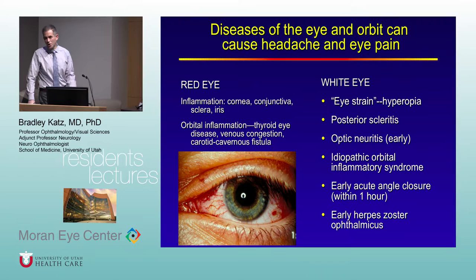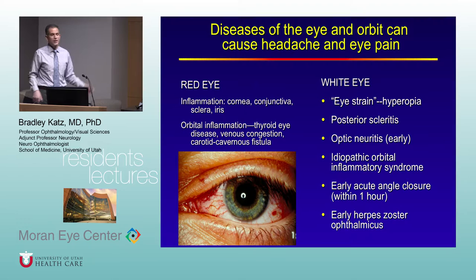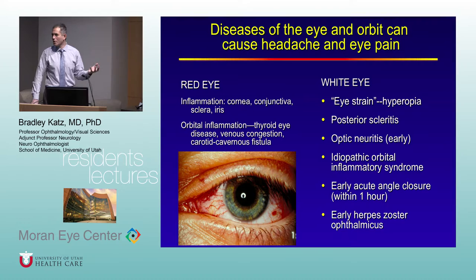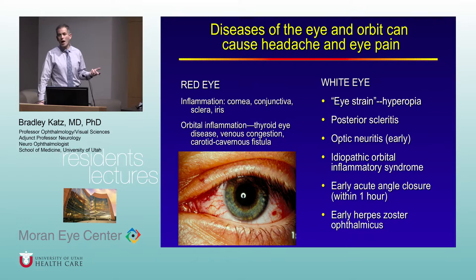Of course, diseases of the eye and eye socket can also cause headache and eye pain — and ruling those out is part of our job as ophthalmologists. Inflammatory conditions of the cornea, conjunctiva, sclera, and iris will be apparent on examination. Orbital conditions like thyroid eye disease or fistula usually have other signs and symptoms. Some patients without obvious inflammation can still have secondary eye pain syndromes.